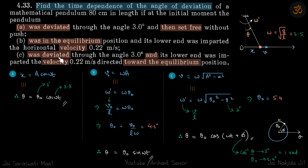Part C: the pendulum is deviated through a certain angle and then a velocity is imparted towards the equilibrium. This is a bit more complicated, so let's analyze it using a phasor diagram. The equilibrium is here — the bob is at a certain point and then pushed towards equilibrium with a certain velocity. In linear terms: it is moved to a certain location and then given a velocity towards equilibrium.